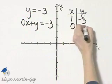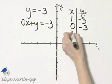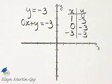So if x is 0, y is negative 3. If x is negative 3, y is negative 3.